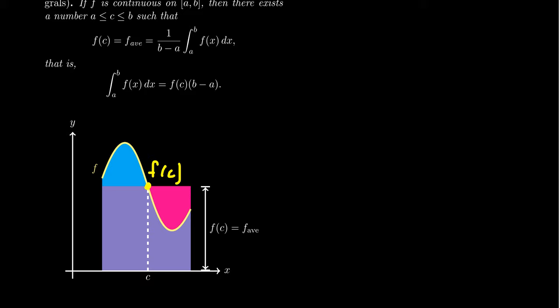If we take a rectangle here with a on the left and b on the right, whose width is b minus a and whose height is f of c, what the mean value theorem for integrals tells us is that the area under the curve is actually equal to the area of this rectangle, and the height of that rectangle is the average value. Geometrically, the average value is saying: if we redistribute the area under the curve into a uniform distribution, it will form a rectangle whose height is that average value.